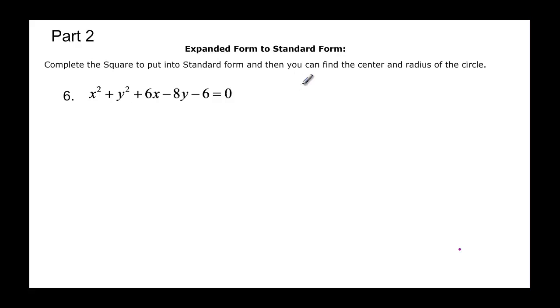First thing we want to do here is we want to get the x's together and y's together, and then we want it equal to any constants that we have. So we want to move all the constants to the other side.